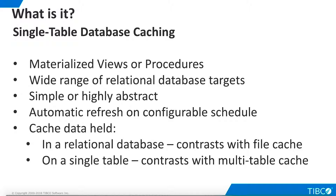TDV offers three mechanisms for caching: file-based, single-table, and multi-table. In general, single-table caching is the go-to choice for most needs. With single-table caching, cached data is stored in a relational database product of the customer's choice. This contrasts with file-based caching, where cached data is stored in a delimited, flat file.